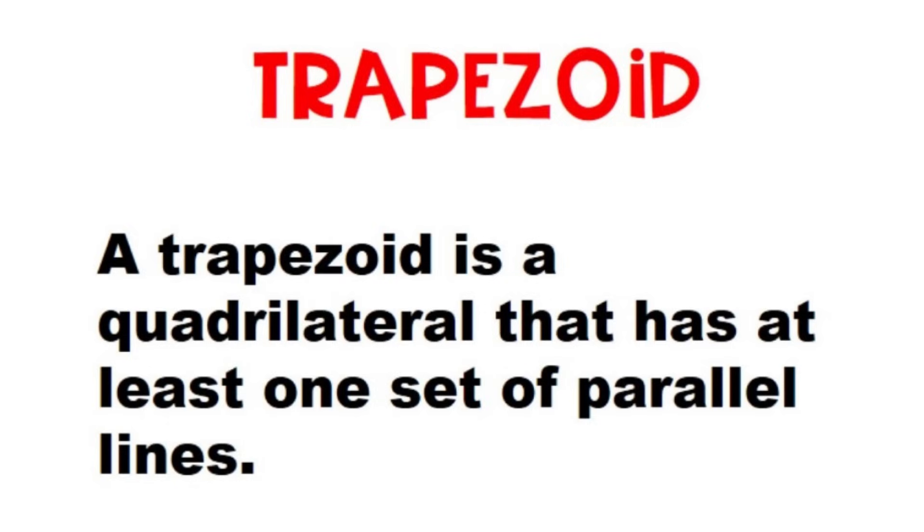Trapezoid. A trapezoid is a quadrilateral that has at least one set of parallel lines.